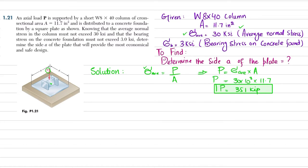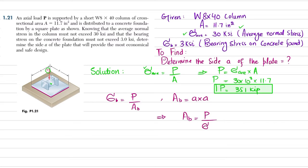Now we find the bearing area. Bearing stress equals load divided by bearing area. The bearing plate of a × a is in contact with the foundation, so bearing area = a × a. A_b = P / bearing stress = 351 / 3 = 117 square inches.